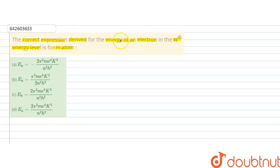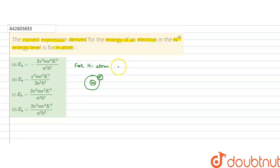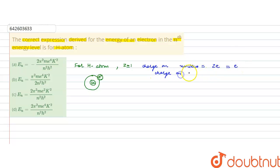In this question we have to derive the correct expression for the energy of an electron which is present in the nth energy level in hydrogen atom. For hydrogen atom, it has one electron. If we draw this — here is the nucleus and one electron is present, orbiting in this energy level. The nucleus has charge Ze, and for hydrogen atom Z equals one, so the charge on the nucleus is e. The charge on the electron is also e.